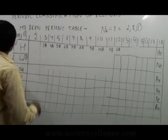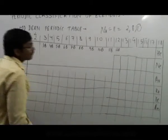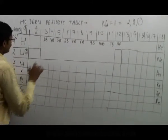Similarly, in period 1, hydrogen and helium were present only. Now the classification started from period 2.